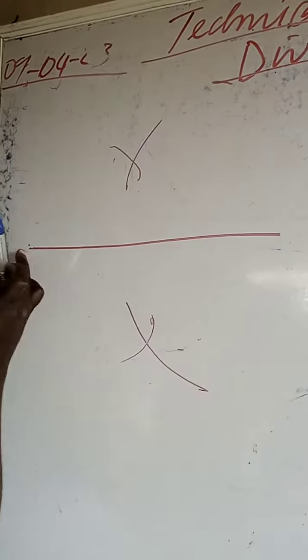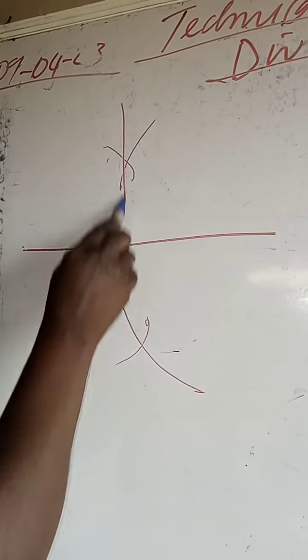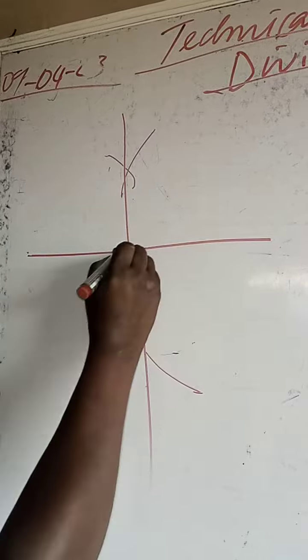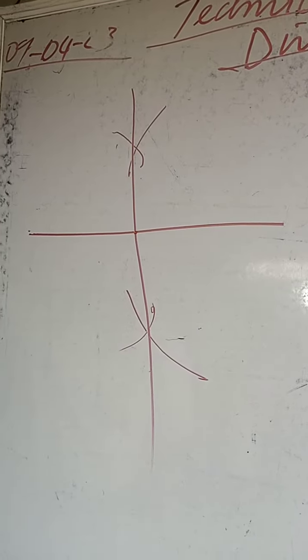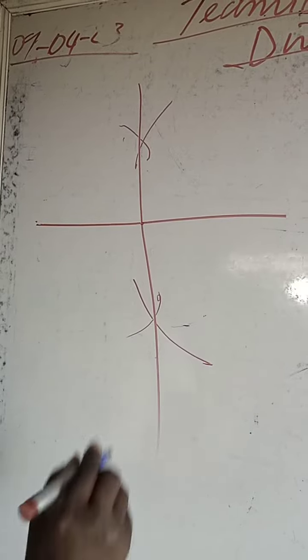You draw one from this side, you draw another one from this side. Then you draw the line like that. That's how to divide a line into two equal parts.